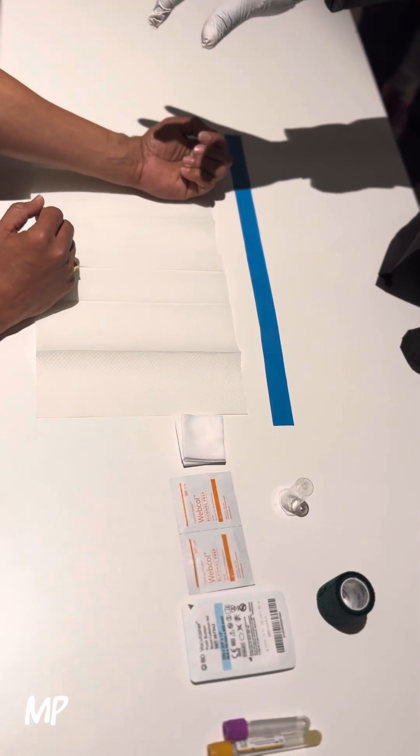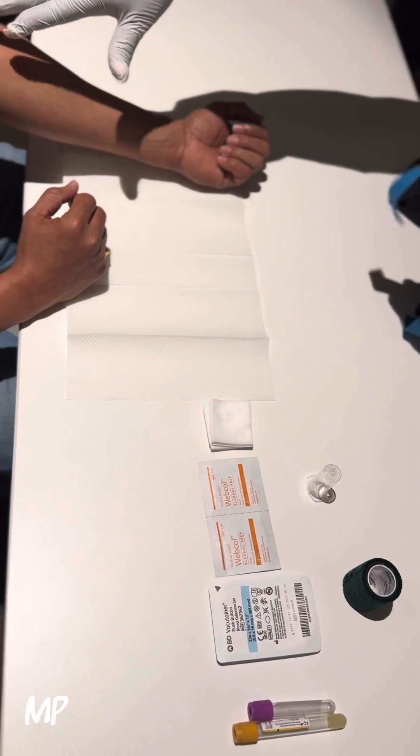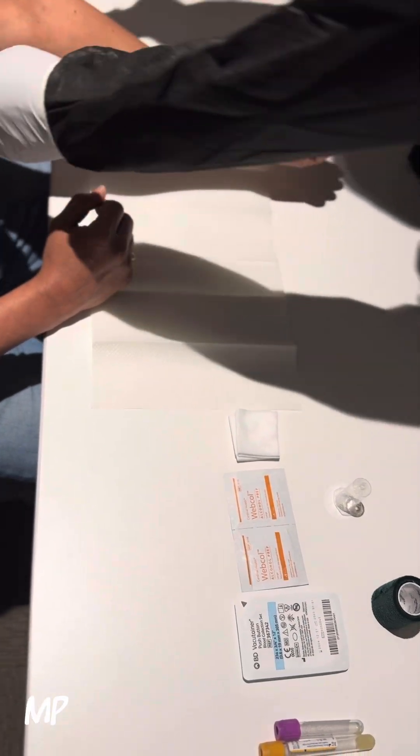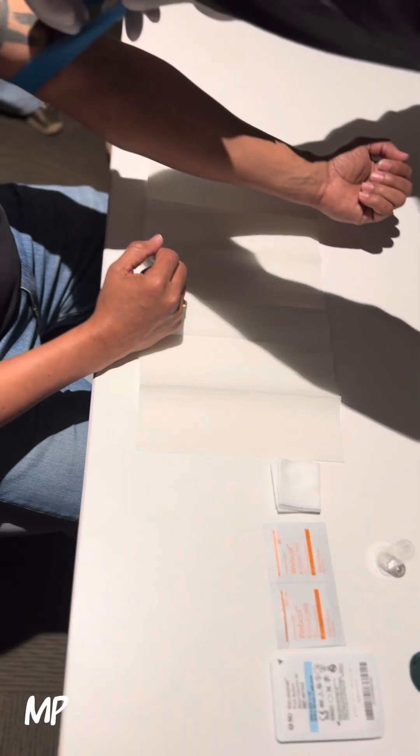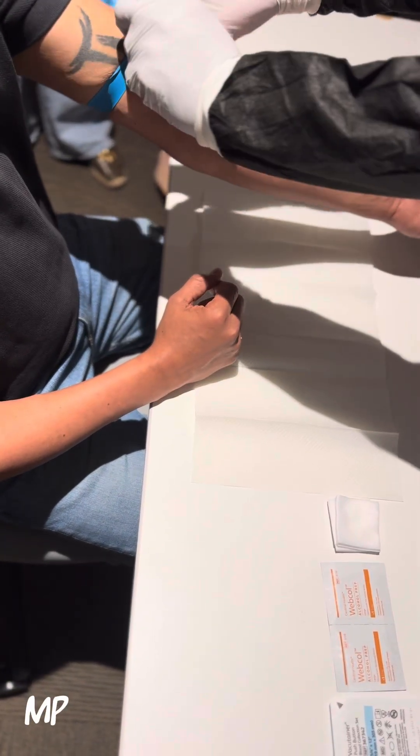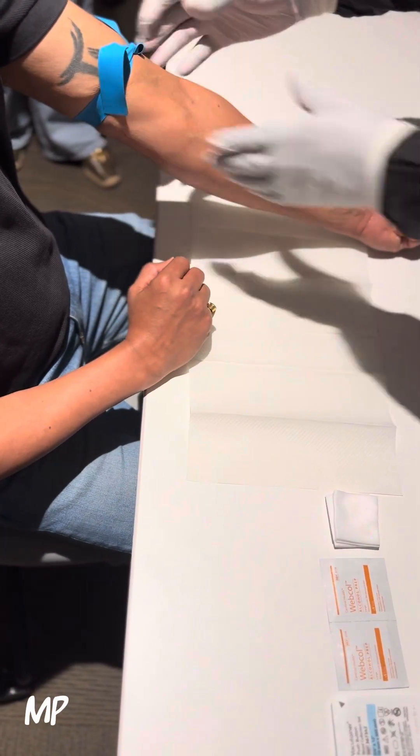Once you identify the site where you're going to perform your blood draw, we're going to use the antecubital area. Apply your tourniquet three to four inches above the site of the incision. Make sure the tourniquet's not too tight.